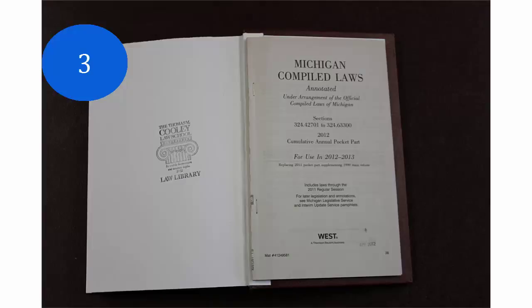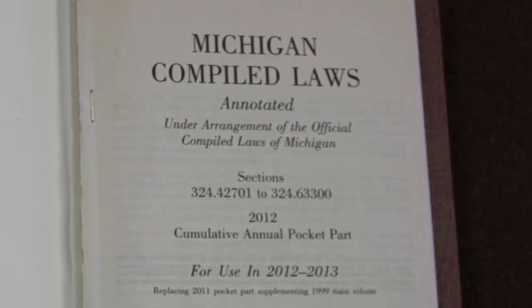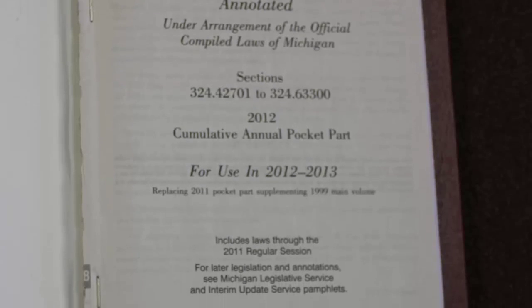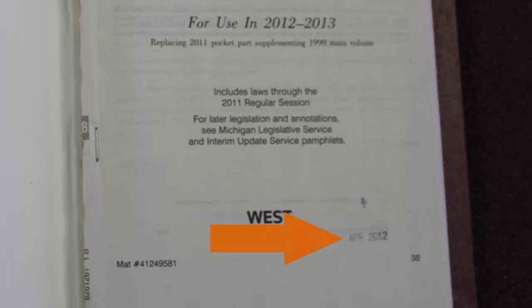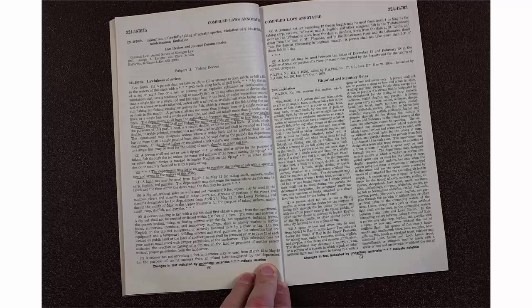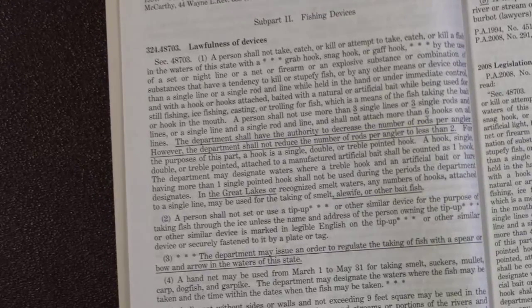Step 3 is to look in the pocket part that is in the back of this main volume that we've been looking at. You can see from the librarian's stamp here that this pocket part is current as of April 2012. So let's look in that to see what has changed. It does look like there have been some changes — the underlined text means that text has changed, and anything with asterisks means that sections have been deleted. But I don't see anything about a crossbow here. So we're going to go on to Step 4 of researching in the MCLA.